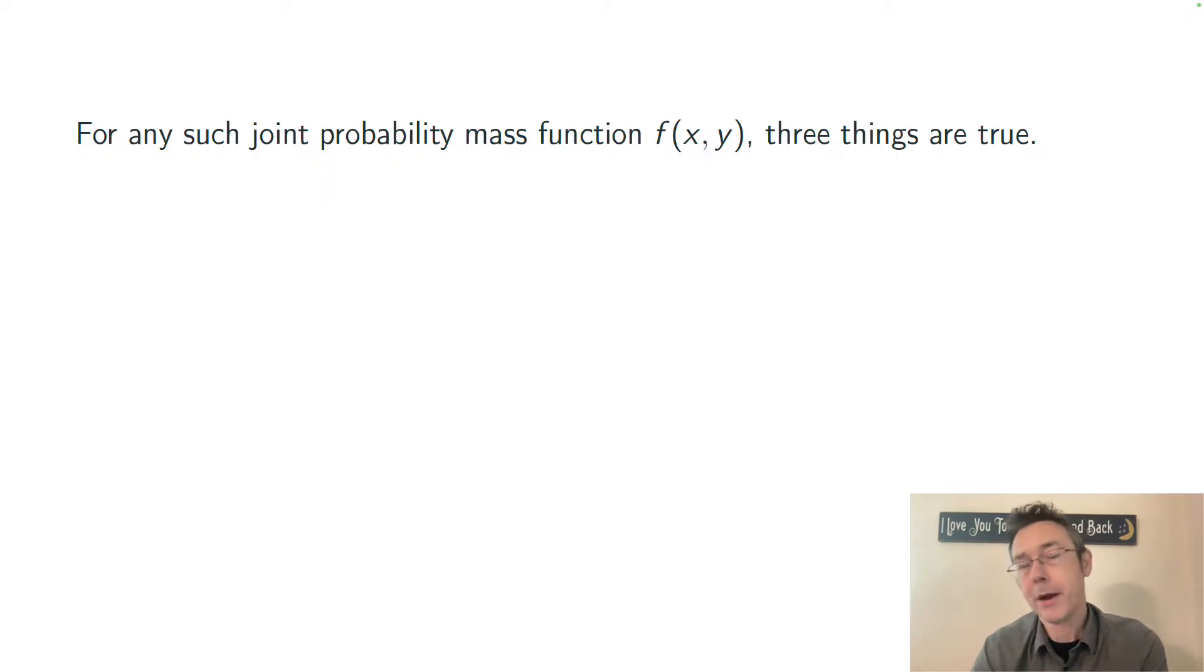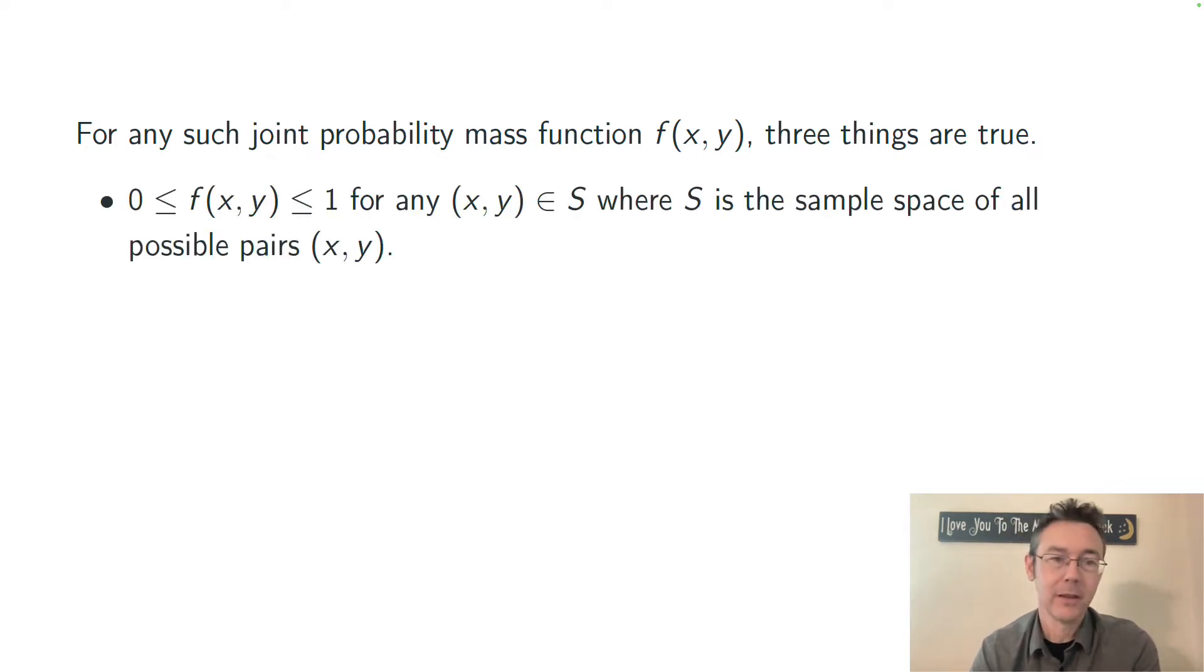Whenever you have a joint probability mass function like this one, you have to have three things be true. First, the probability mass function has to be between 0 and 1, inclusive, for any combination of values x and y. It's a probability, so it can't be negative and it can't be bigger than 100%. Secondly, all of the probabilities have to add up to 1. It's a discrete joint probability distribution. So you have a countable number of combinations here. You can actually sum them all up and you should get 1.